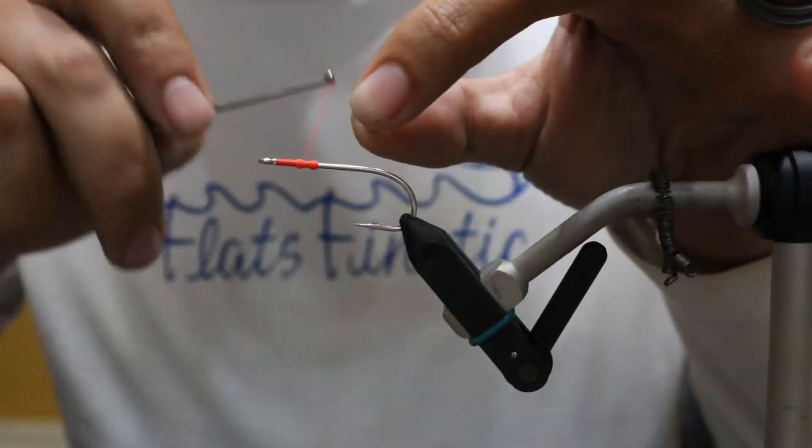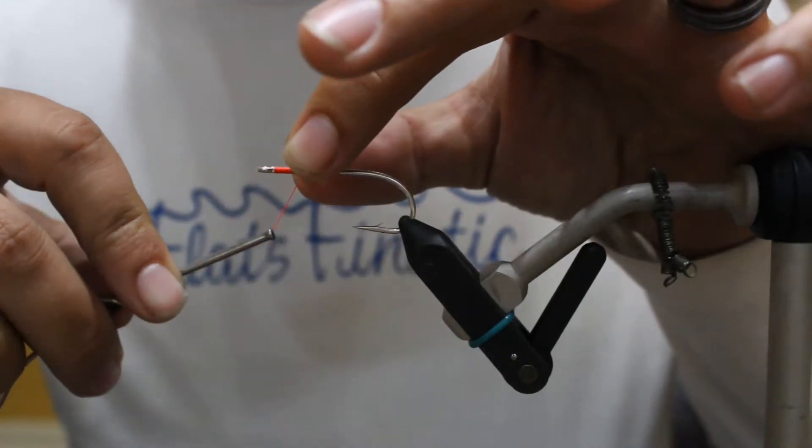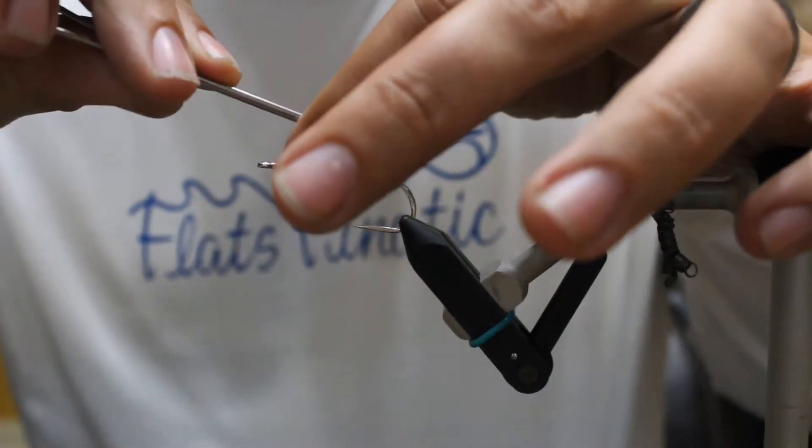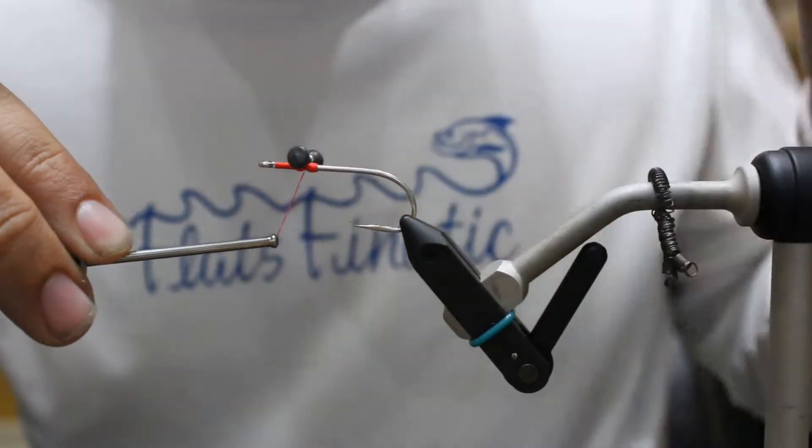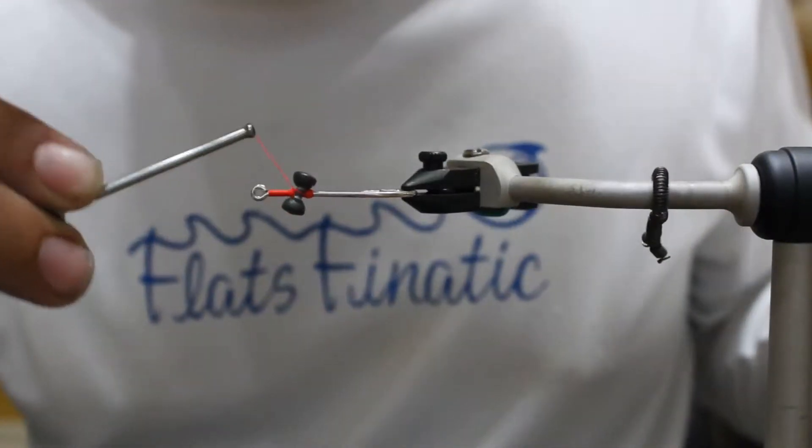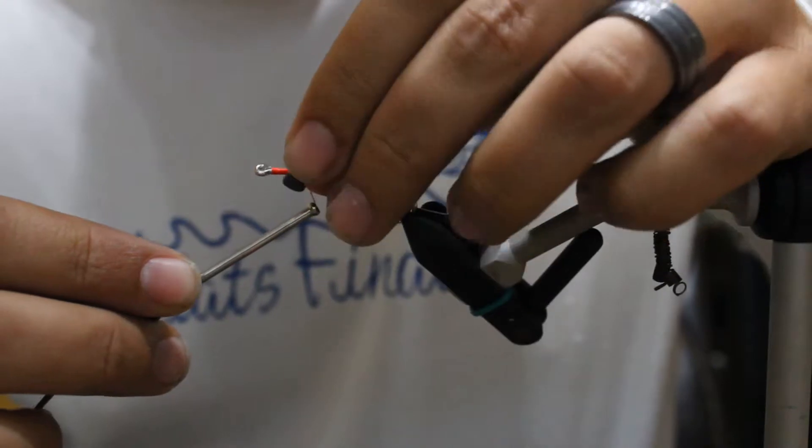I'm going to wrap once into the center and then I'm going to capture it over the top. With these top cross stitches, I'm going to do three of those.